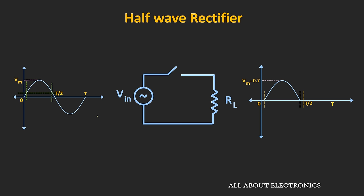Now during the negative half cycle, the voltage which appears across the diode will be negative, and it will simply act as an open circuit. The output voltage across the load will be equal to 0. In most cases during this rectification process, the peak amplitude of the applied input voltage is much larger than the diode voltage. So the output waveform of the rectifier will be much closer to the ideal waveform, and in that case we can simply neglect the drop across the diode.